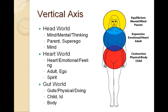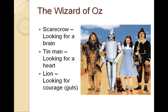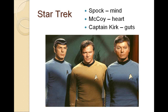We have this triune nature, and the heart world sits in the middle — it maintains equilibrium and keeps the balance between what's going on in our head and what's going on in our physical body. The good old story of the Wizard of Oz reflects this: the scarecrow is looking for a brain, the tin man is looking for a heart, and the cowardly lion is looking for courage — for guts. Even Star Trek mirrors this in the three principal characters: Spock was all mind, McCoy was the heart, and Captain Kirk was the guts, the courage, the hero.